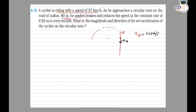The particle has both tangential and radial acceleration. This radial acceleration is the centripetal acceleration, represented by ac or ar. The vector sum of these gives the net acceleration of the cyclist.